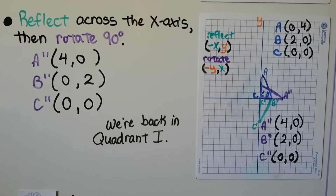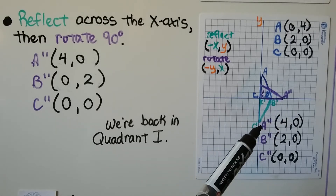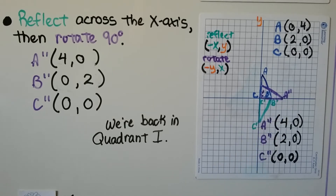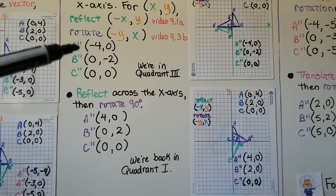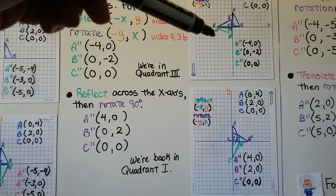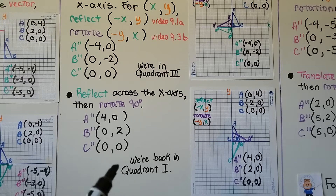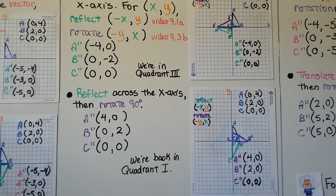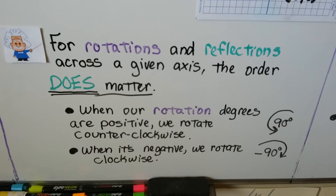Now we're going to try reflecting across the x-axis first, then rotating 90 degrees — doing it the other way around. We start with our little blue triangle in quadrant 1, reflect across the x-axis to get the green one, then rotate it 90 degrees and end up back in quadrant 1. For the first approach — rotating and then reflecting — we were in quadrant 3 when finished. Reflecting and then rotating, we end up in quadrant 1 again. The ordered pairs are different. So for rotations and reflections across a given axis, the order does matter.